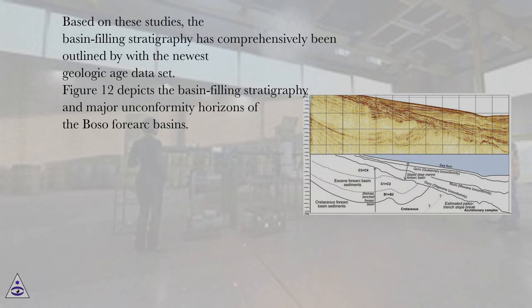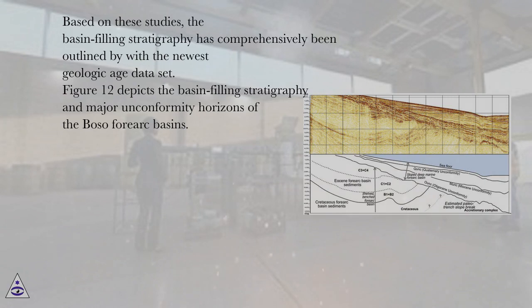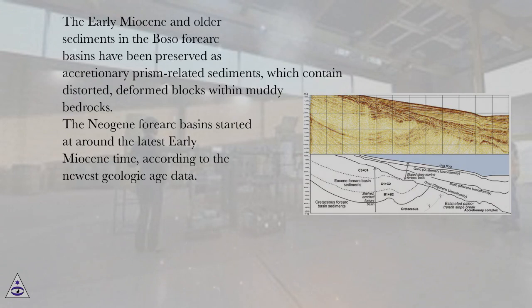Based on these studies, the Basin Filling Stratigraphy has comprehensively been outlined using the newest geologic age data set. Figure 12 depicts the Basin Filling Stratigraphy and major unconformity horizons of the Boso Forearc Basins. The early Miocene and older sediments have been preserved as accretionary prism-related sediments, which contain distorted, deformed blocks within muddy bedrocks.